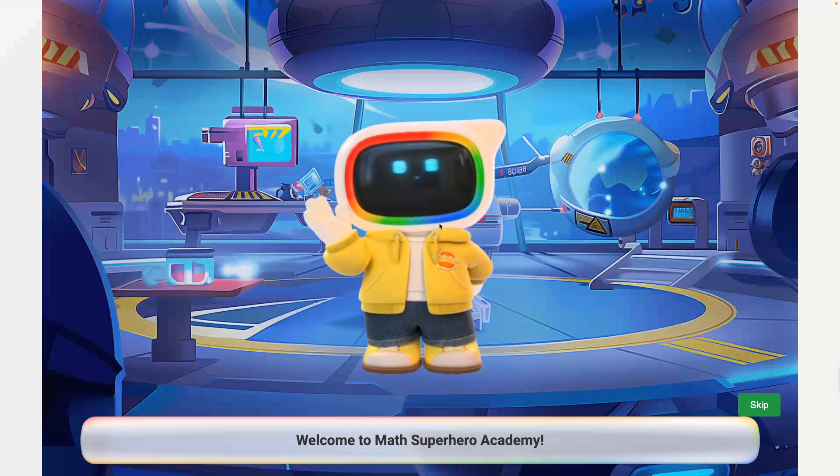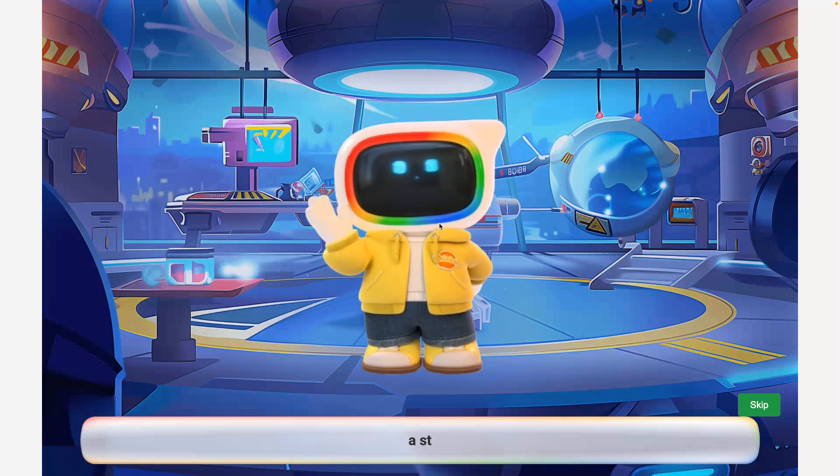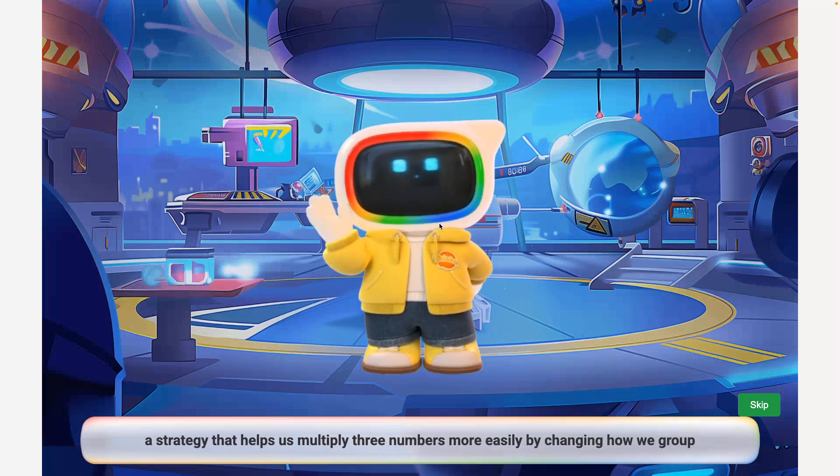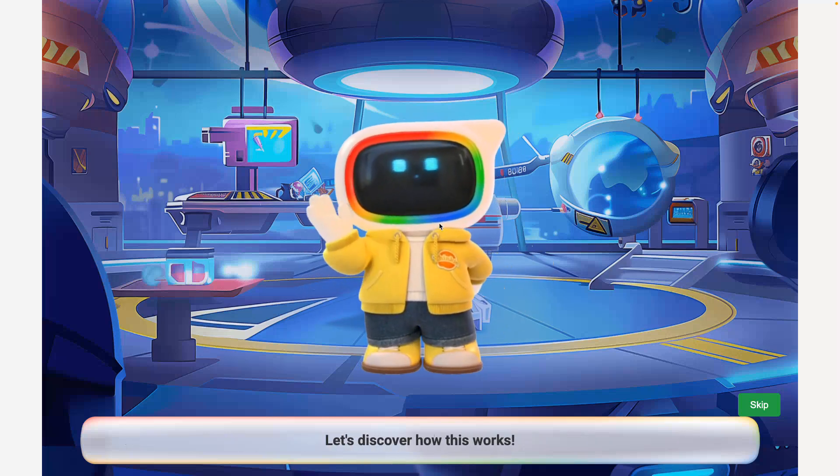Welcome to Math Superhero Academy. Today we'll explore the associative property, a strategy that helps us multiply three numbers more easily by changing how we group them. Let's discover how this works.